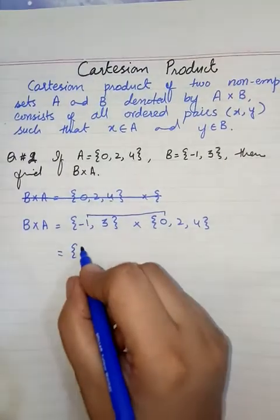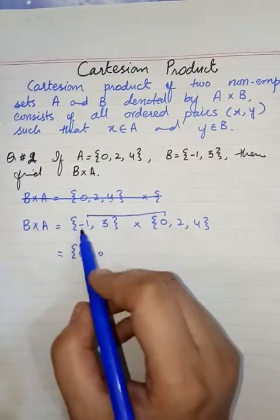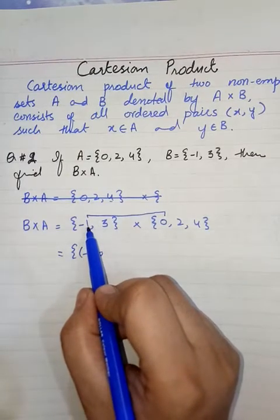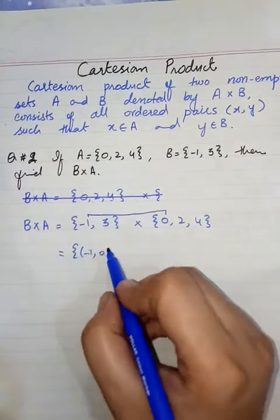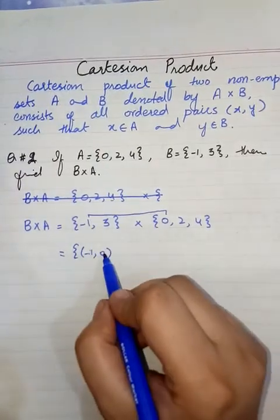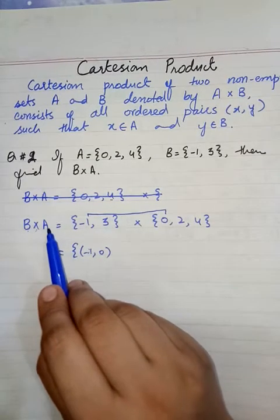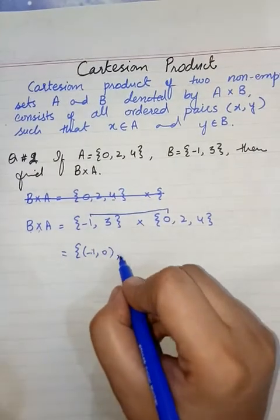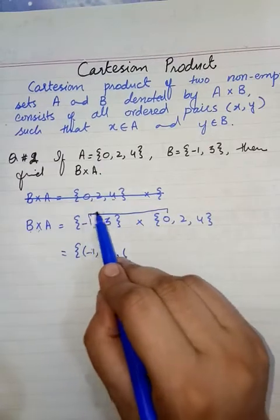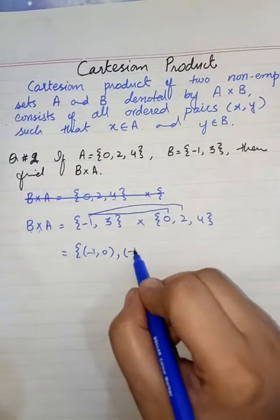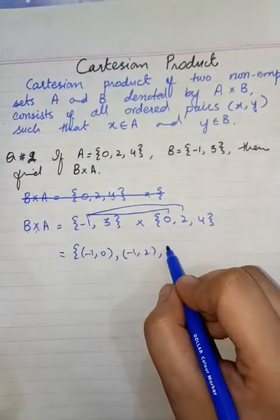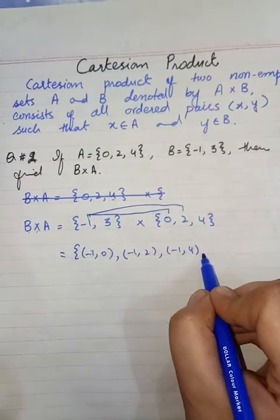Minus 1, 0. You have to write first element of the first set at first place. Minus 1, 0. You cannot write 0 minus 1. Clear? If you are going to multiply B multiply A, comma, next ordered pair minus 1, 2. Next ordered pair minus 1, 4.